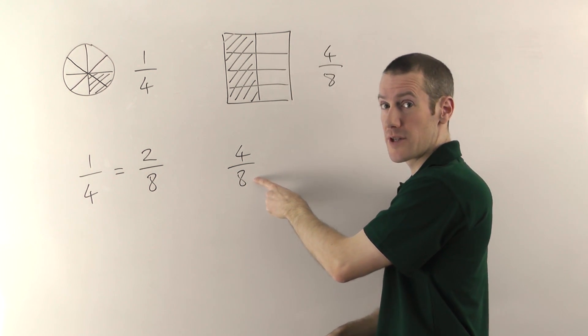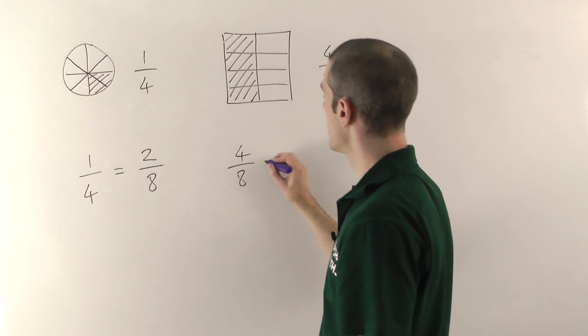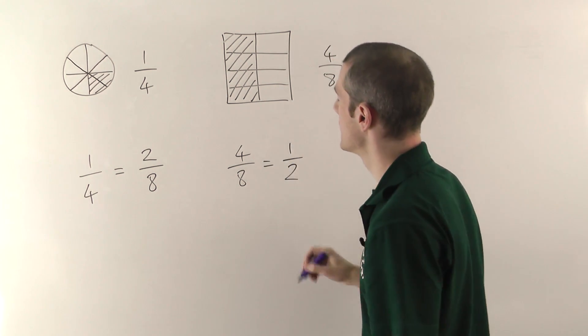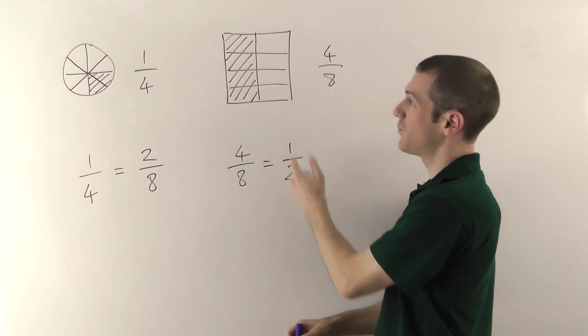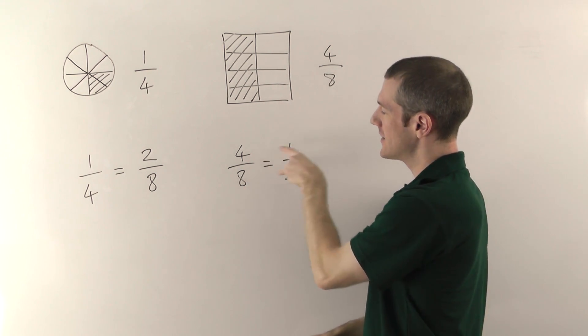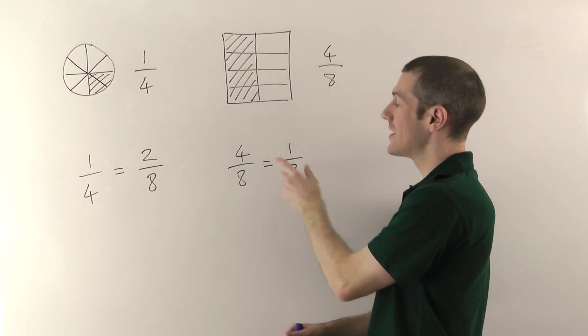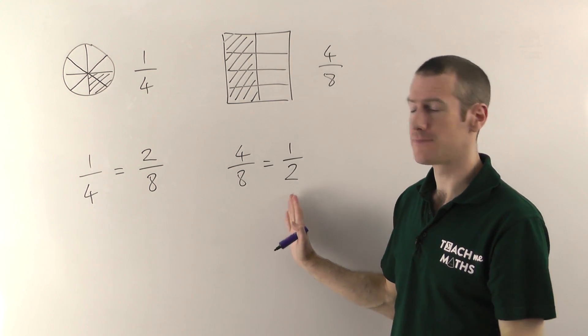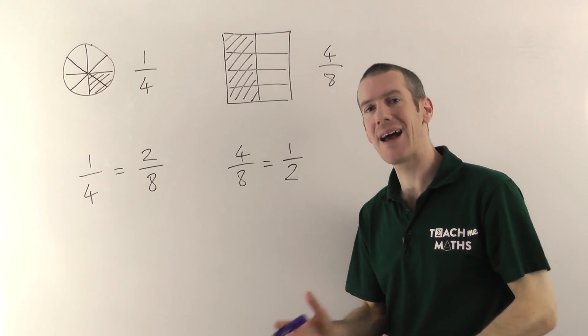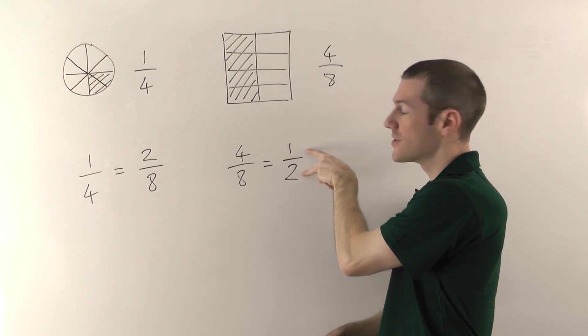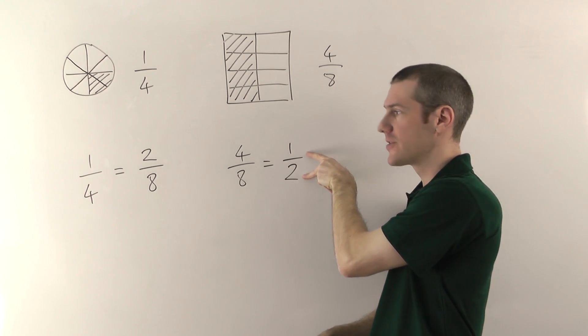So if I divide the top and bottom of this fraction by four, fours into four go once, fours into eight go twice, you can see this is the same as a half, which is obvious from the picture really. But this process of dividing down and making the number smaller is very important in maths, and it's known as simplifying, or sometimes it's called cancelling. Whenever you give a fraction as an answer in maths, you must always cancel it or simplify it so you've got the smallest numbers possible on the top and bottom.